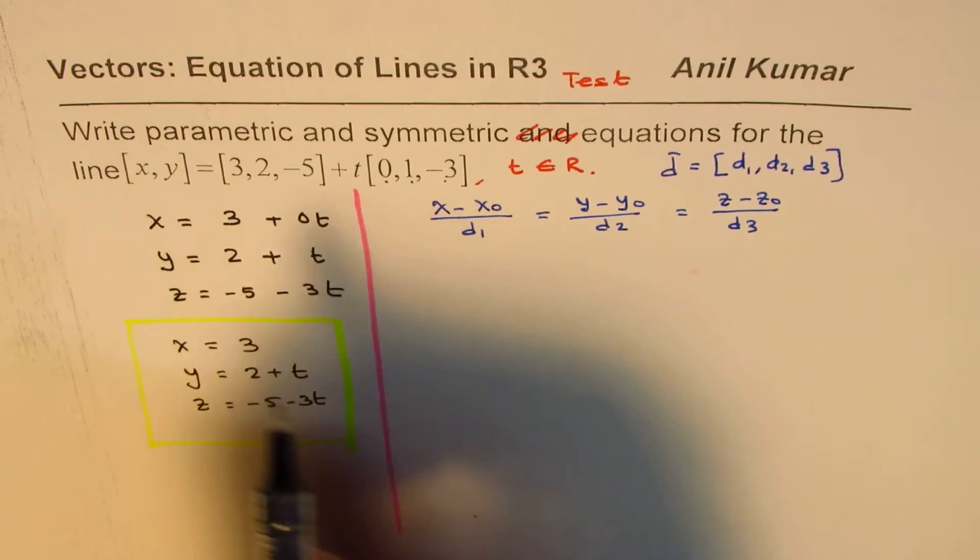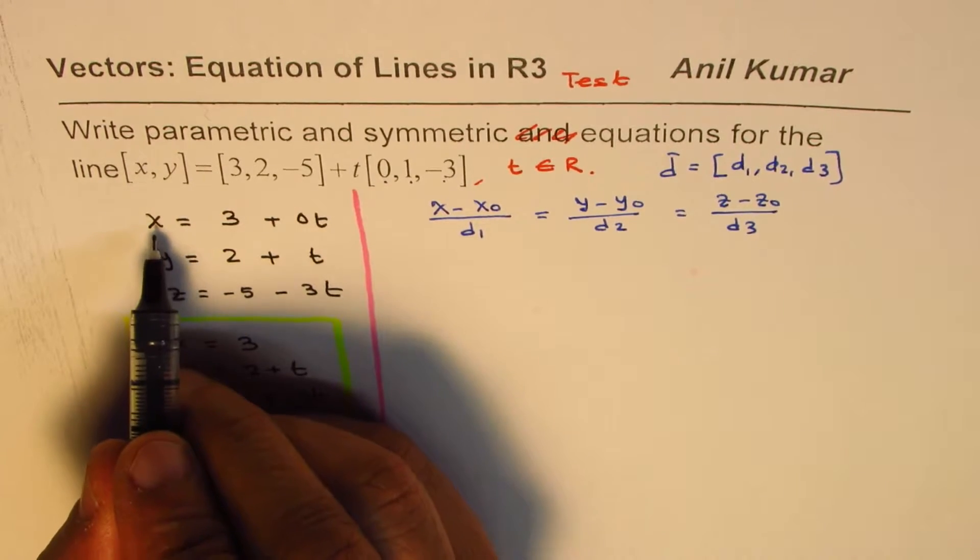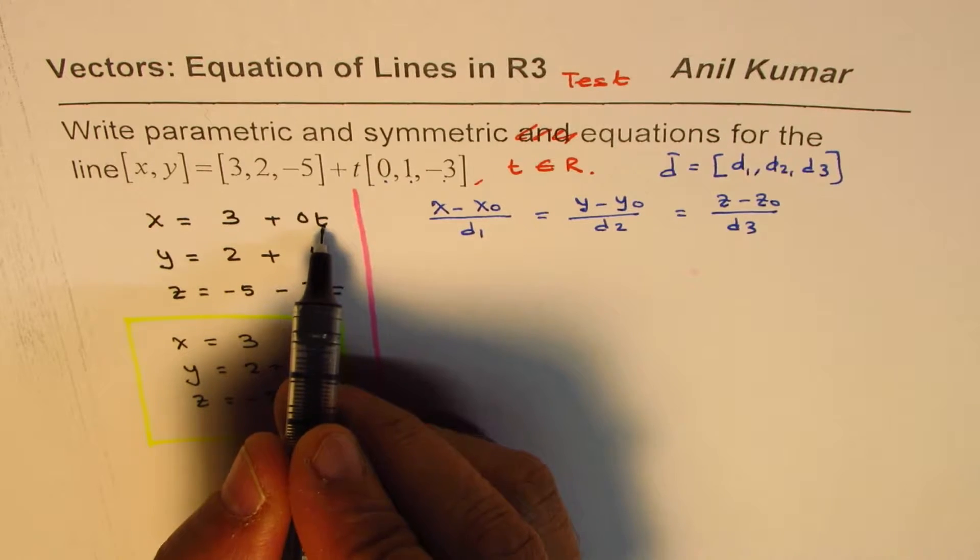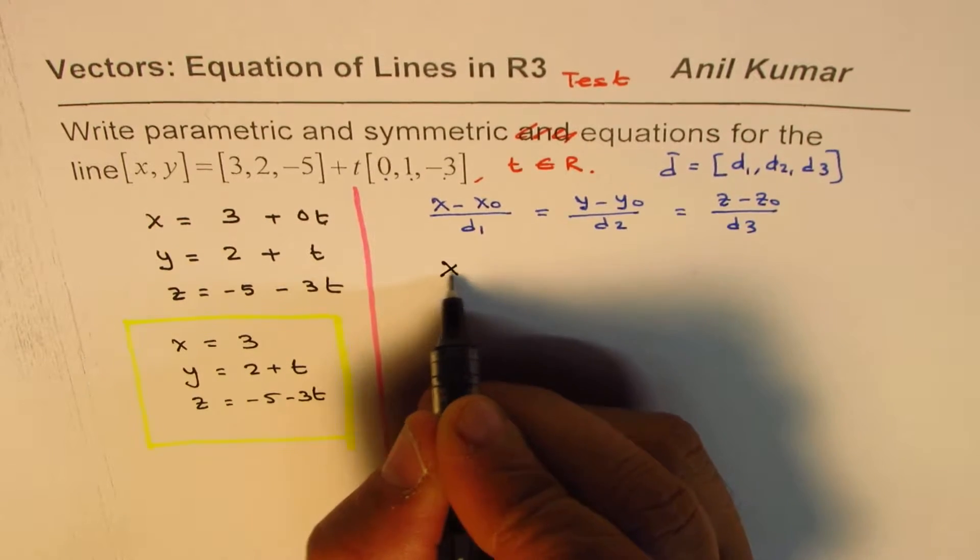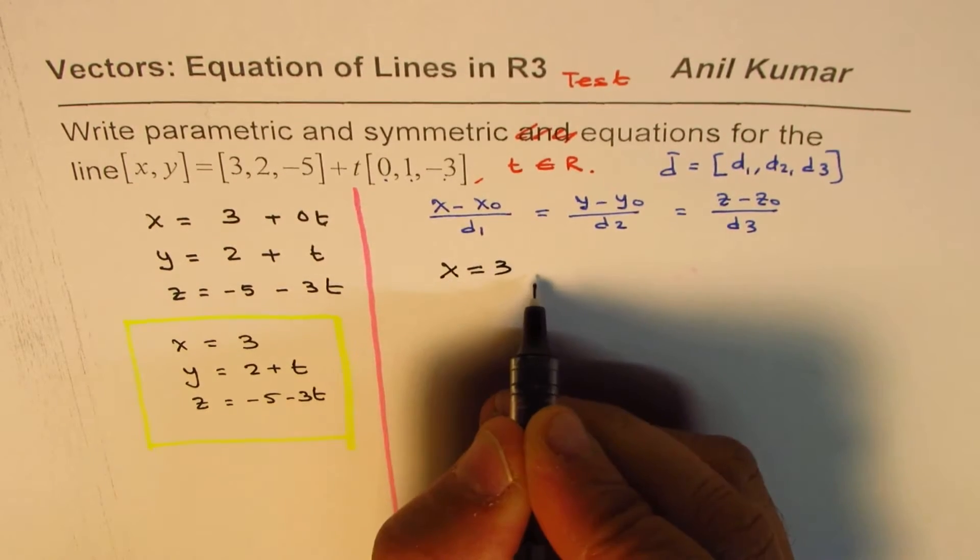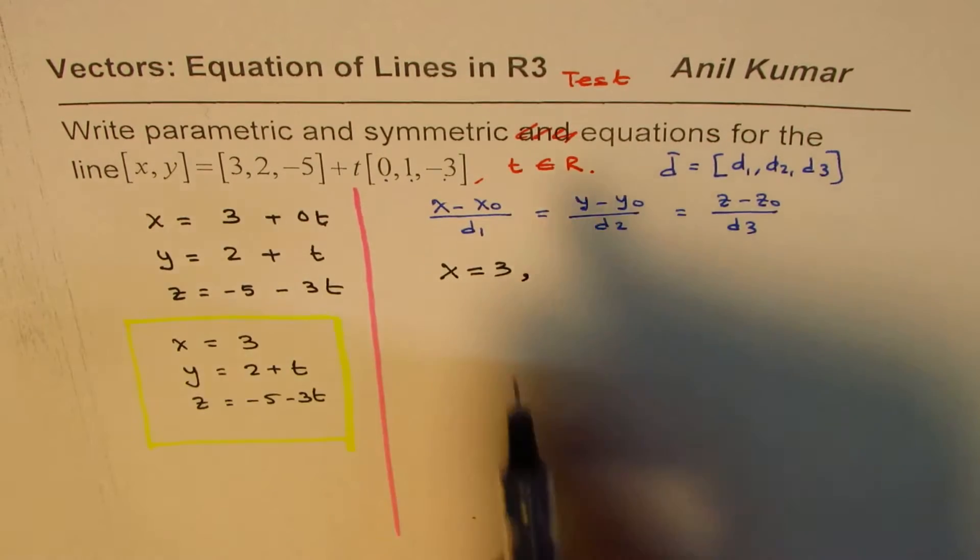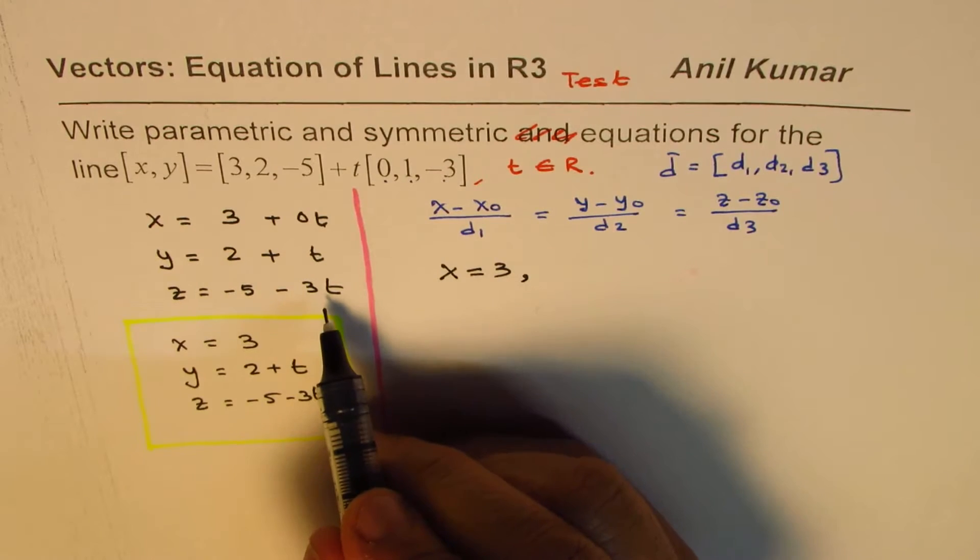So to solve this question, what we really do is notice that x is equal to 3 for any value of t. So we say, well, x is equal to 3 always. So it is not really dependent on t.